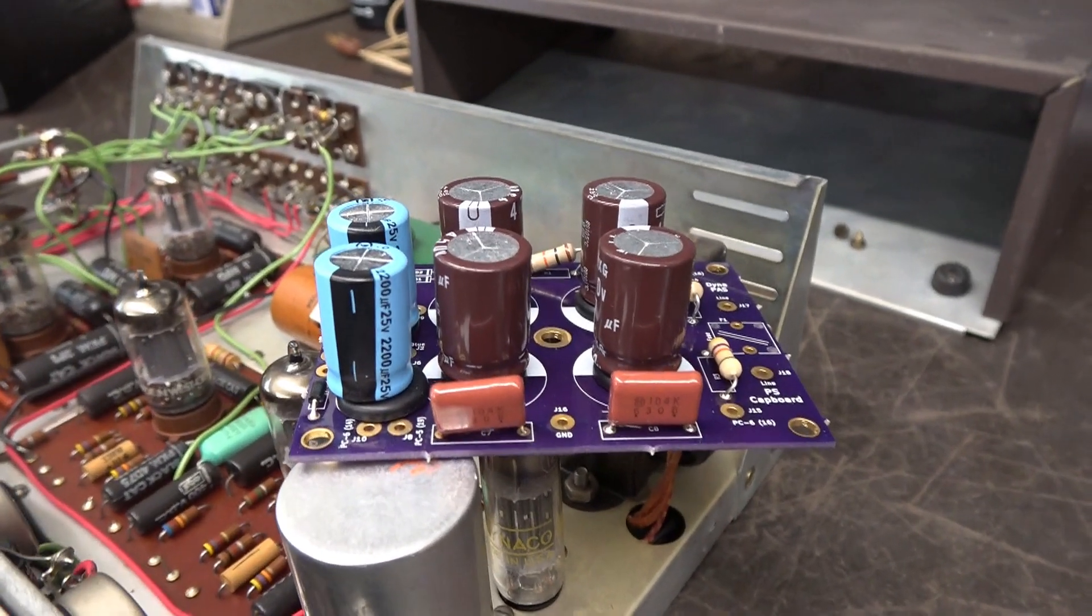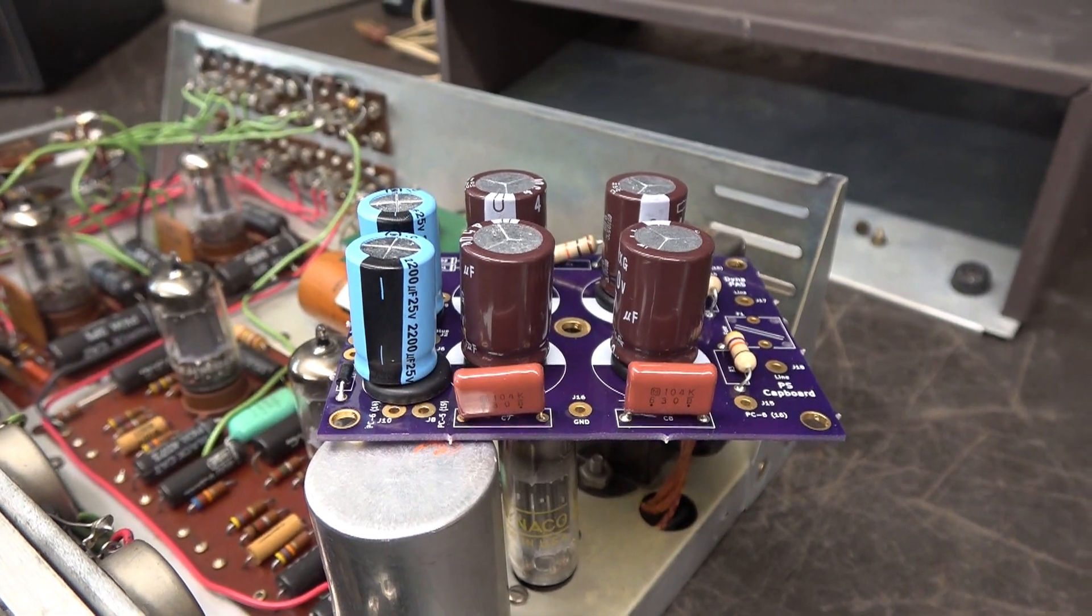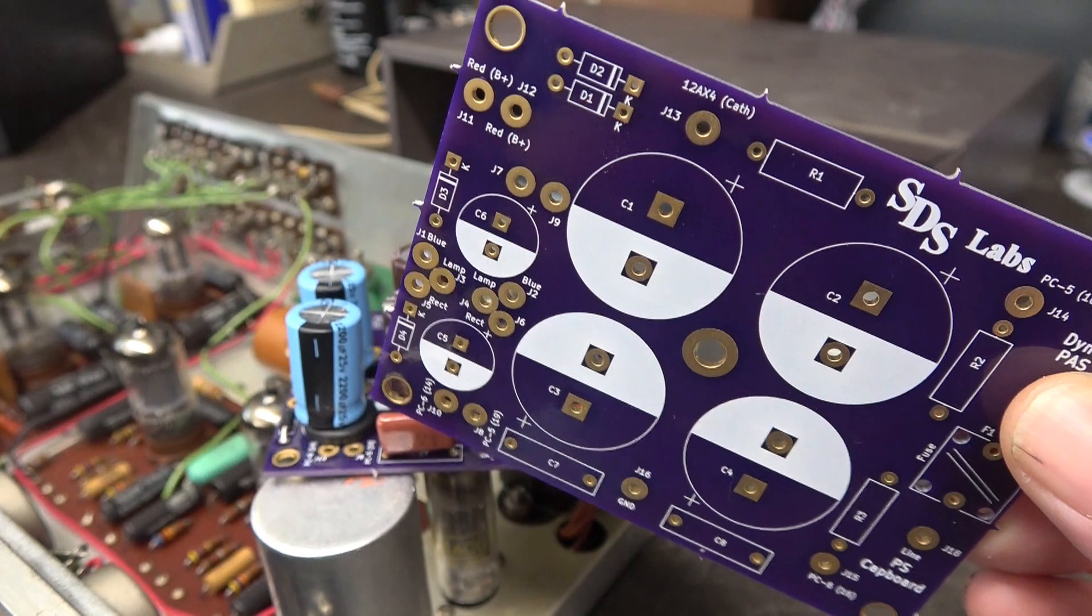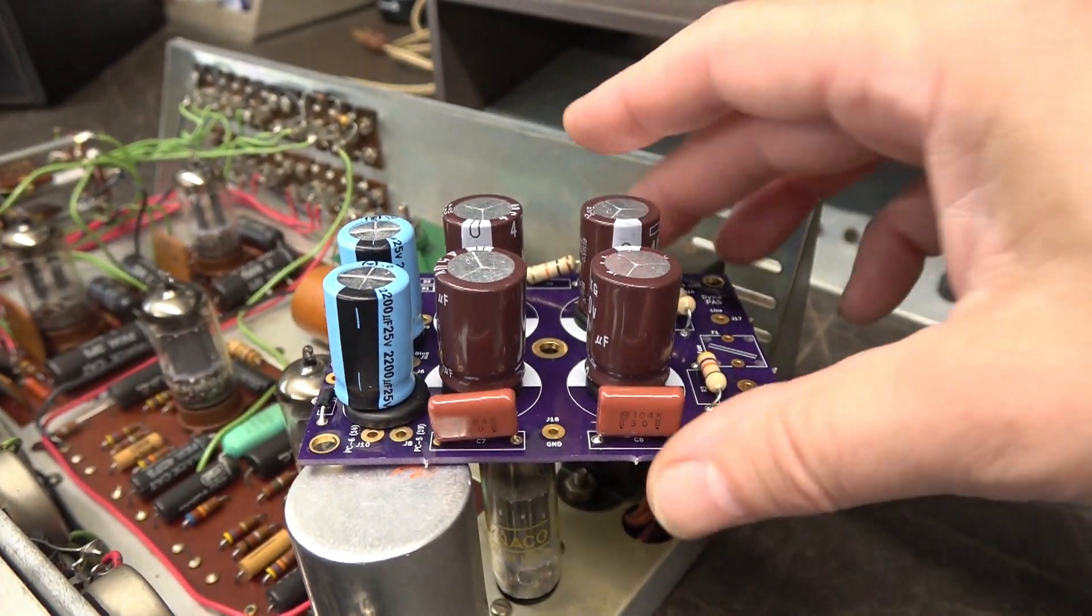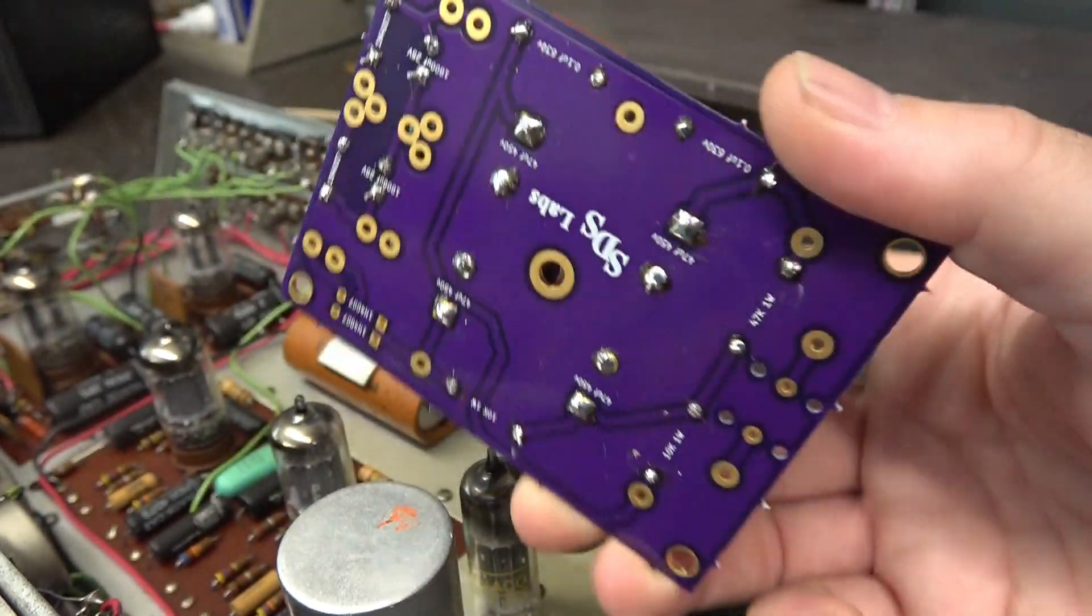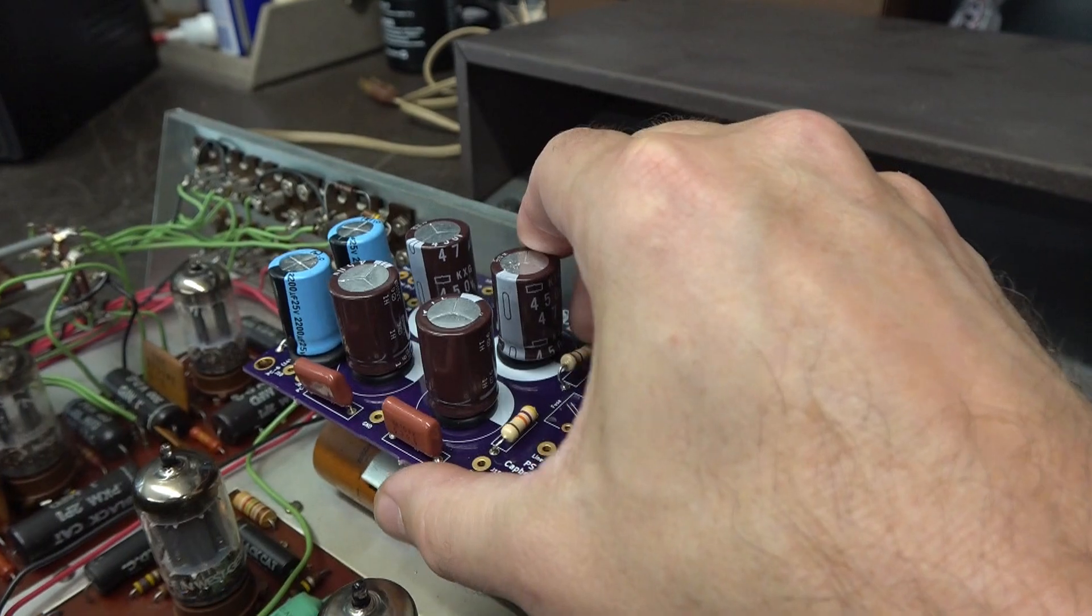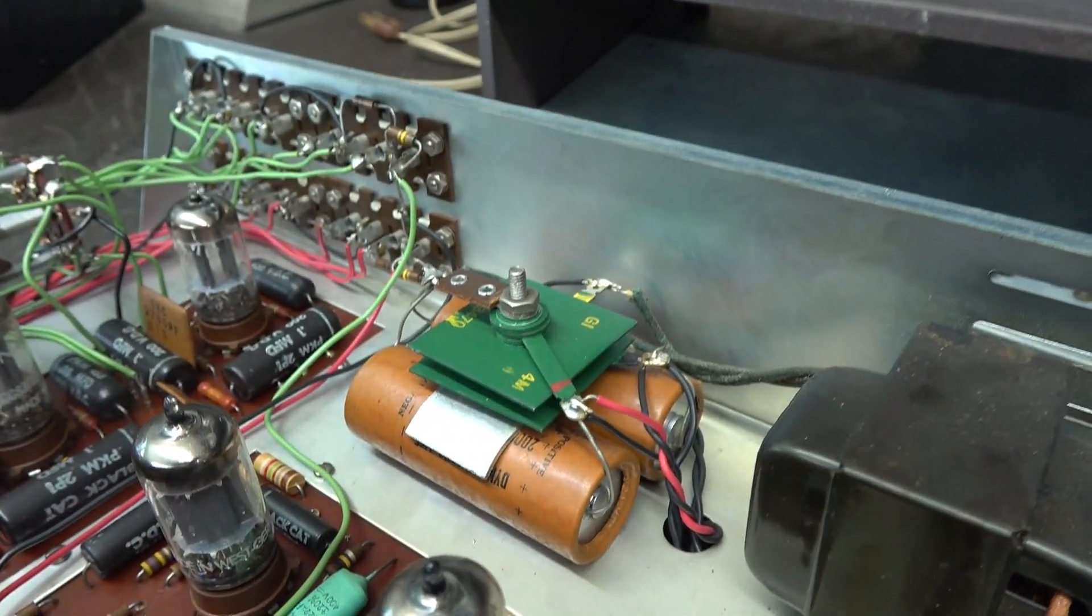So there's two ways that you can get these boards. You can buy them fully populated from Triode Electronics or you can buy just the blank circuit board, which I do, and then I put on my own parts. This one is all populated ready to install and it's going to actually sit right on that same stud as the old original assembly.